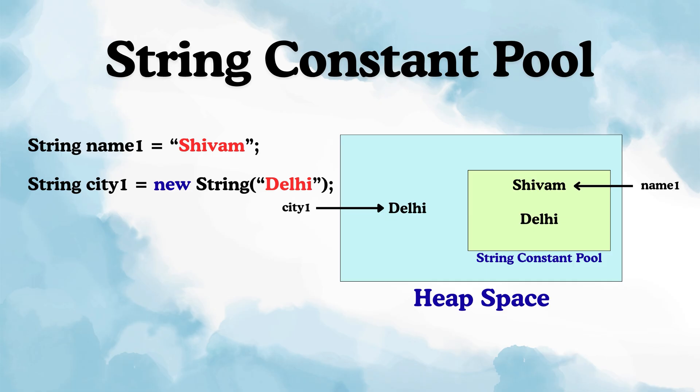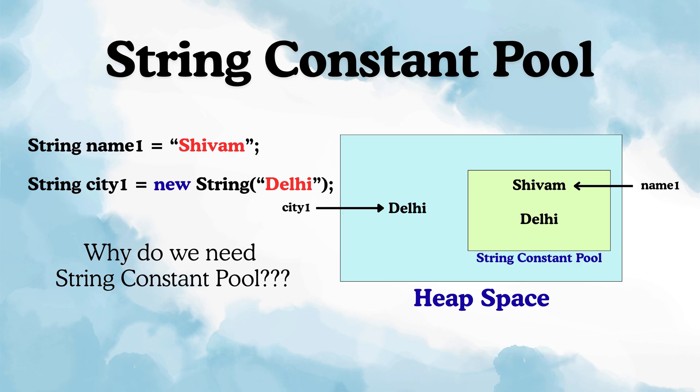Basically, whenever we create a string literal, that literal gets saved in the string constant pool. But whenever we create a string like an object using the new keyword, then two copies are made — one in the heap memory and one in the constant pool. And in that case, the reference variable will be pointing towards the one in the heap memory.